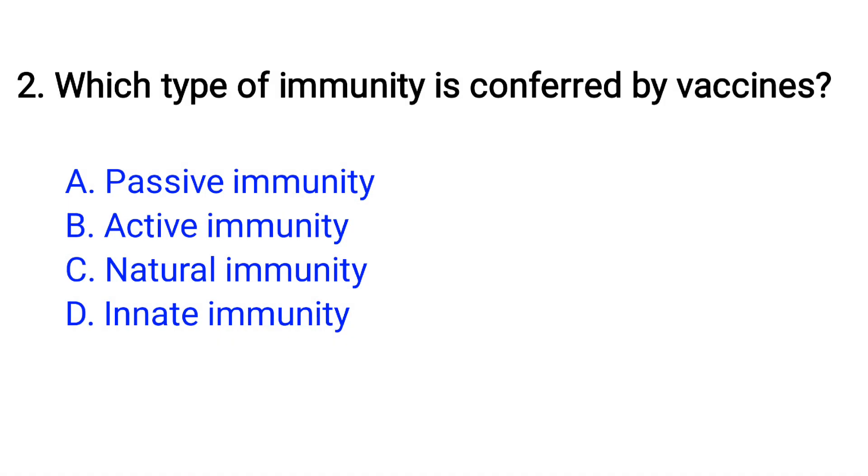Question number 2. Which type of immunity is conferred by vaccines? Option A: Passive immunity, B: Active immunity, C: Natural immunity, D: Innate immunity. The right answer is option B, Active immunity.